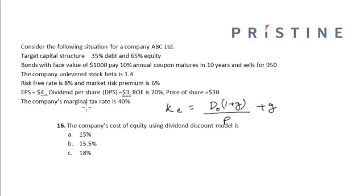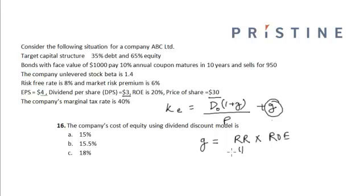My D0 is equal to $3 and my P is equal to $30. Now we have to calculate G. The sustainable growth rate is equal to retention rate into ROE, that is return on equity. My retention rate is the amount of net income that is not paid as dividends to the common shareholders.